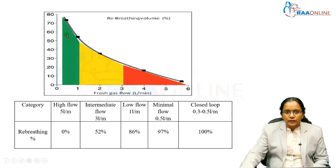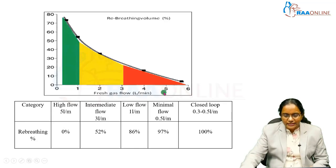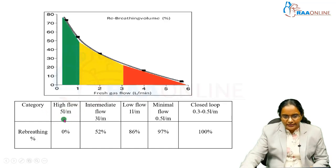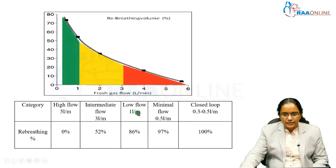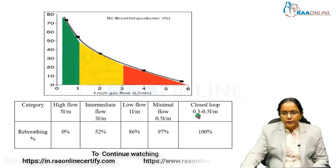This graph shows the category — whether it is high flow, intermediate flow, low flow, or minimal flow — and the percentage of re-breathing which occurs in each flow type. If it is 5 liters flow, the re-breathed volume is very low, almost 0%. As the flow decreases, the re-breathing volume increases. In high flow above 5 liters per minute, re-breathing is 0%. At intermediate flow of 10 liters per minute, the re-breathed volume is 52%. Low flow anesthesia at 1 liter per minute accounts for 86% re-breathing. Minimal flow at 0.5 liters per minute has a re-breathed fraction of around 97%, and in closed loop anesthesia where fresh gas flow is 0.3 to 0.5 liters per minute, the re-breathed fraction approaches maximum.